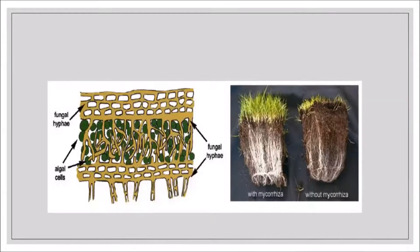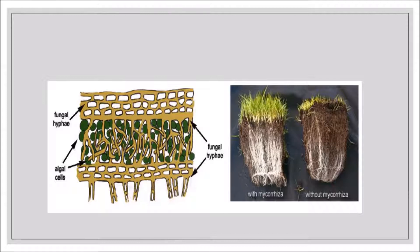On the left side you can see the fungal hyphae with algal cells in between — the fungi and algae are present together in a mutual relationship, which is the symbiont association. On the right side, mycorrhiza is shown — in higher plants, these fungi are present on the roots in a mutual relationship.